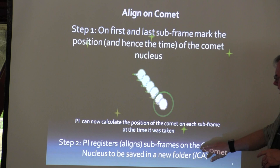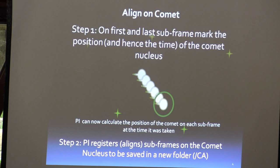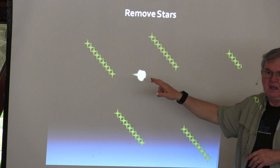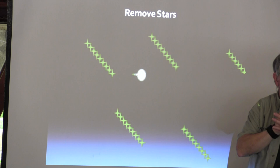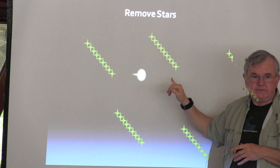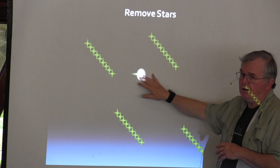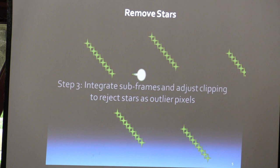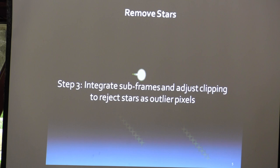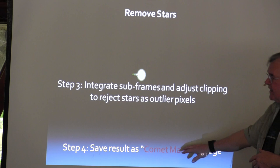So the first thing you do is identify the first and last comet position, and then it aligns all the subframes on the position of the comet. Since it knows where the comet is on each subframe, it puts those positions in the same place, so you basically have a single image of the comet. When you align all these subs on the comet, the stars are moving. By aligning them and rejecting pixels that are not in every frame — the stars are in a different place in every frame — it rejects the star pixels and keeps the pixels that are in every frame, which is the comet. So it integrates the subframes, adjusts the clipping to reject the stars, and basically the stars disappear. Now you've got your comet master.